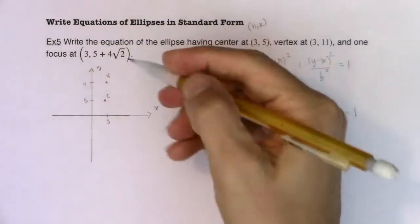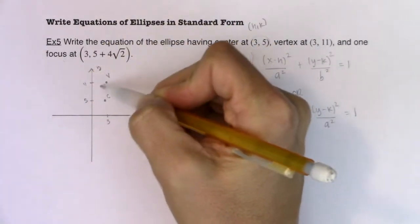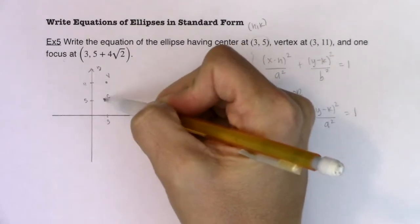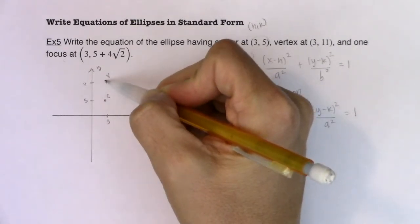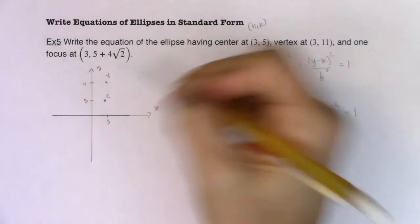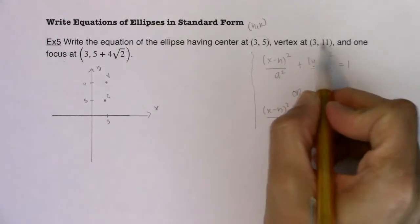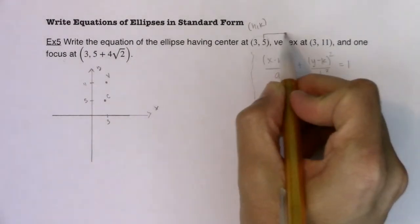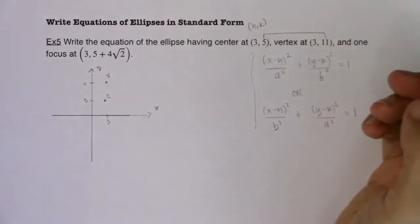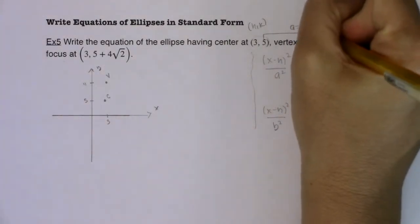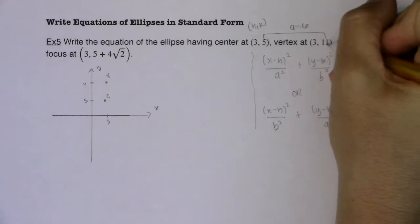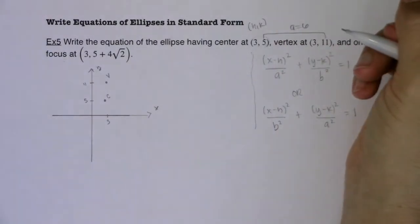Now if I have an ellipse and this is a vertex, I know I'm looking at a vertical ellipse. And whenever you talk about going from a center to a vertex, that's a distance of a units. And we can see here that in order to go from (3, 5) to (3, 11), it's my y coordinate that changed. And if my y coordinate's changing, that's great to keep that in mind. But I can also see that a is 6 because 11 minus 5 is 6.